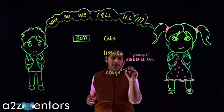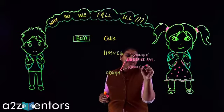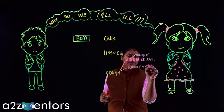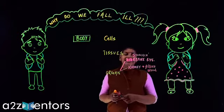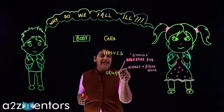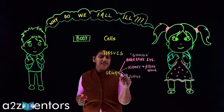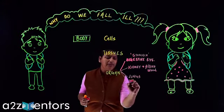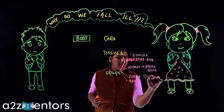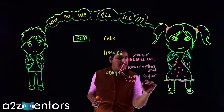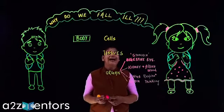One important organ is the kidney, which basically filters blood and removes all the toxic compounds. Then what else? I have lungs for respiration. I have brain for thinking. This is for respiration and this is for thinking.